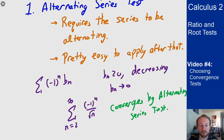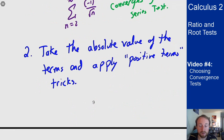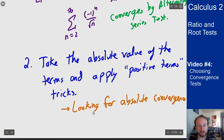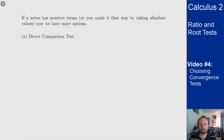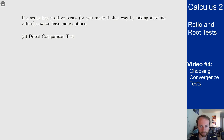The only other option for non-positive terms is to take the absolute value and look for absolute convergence by using the positive series tricks we'll talk about next. You're looking for absolute convergence, not just normal convergence, but that may be the only route available to solve the problem. With regard to positive term tricks, if a series has only positive terms — or you made it that way by taking absolute values — you can use all of the following techniques.